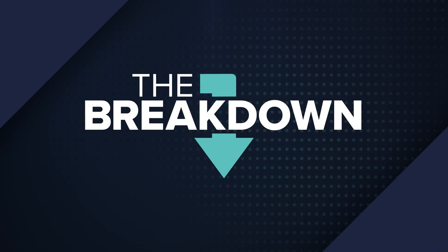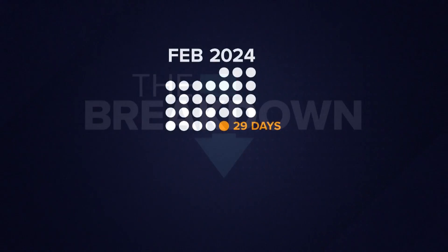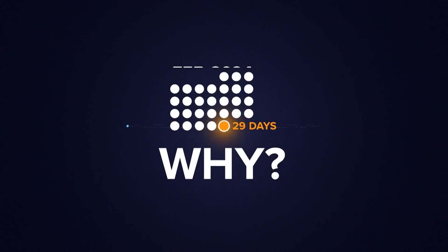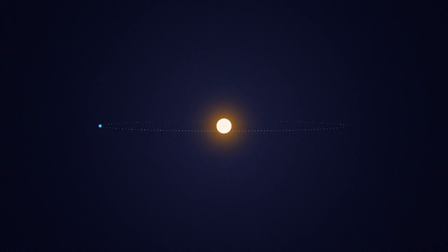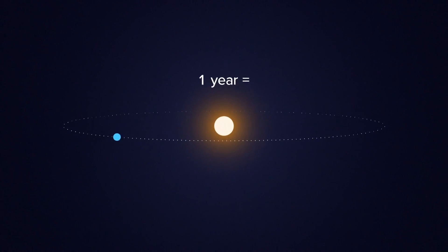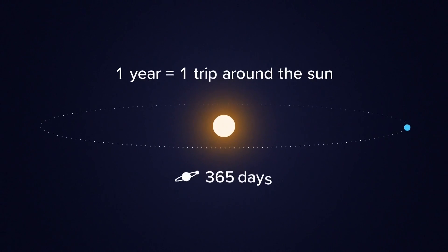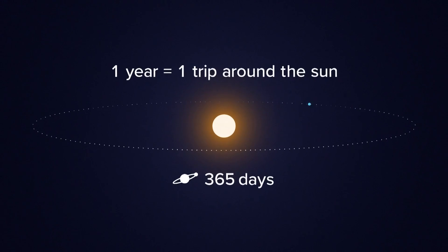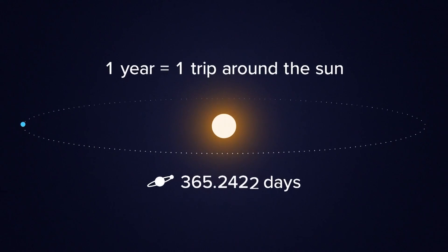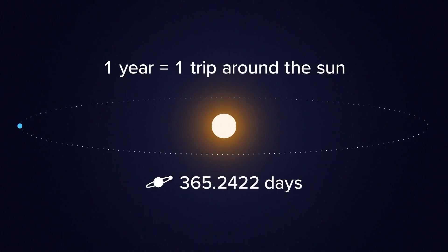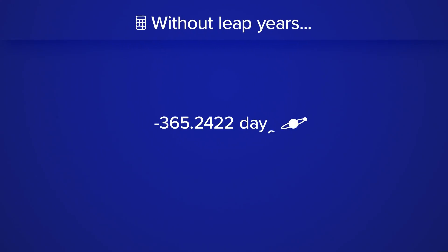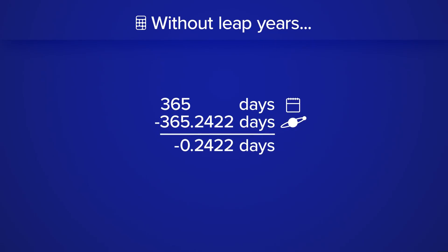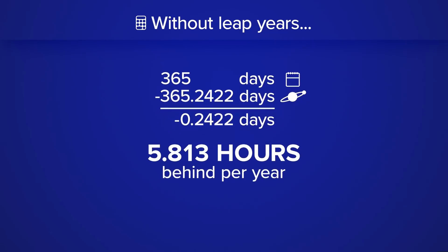In your breakdown, 2024 is a leap year, and the question arises: why do we have leap years? Well, the Earth takes one year to revolve around the sun, right? Not exactly. It actually takes 365.2422 days. So when you subtract and find the difference, it's not zero. We realized we're behind about 5.8 hours each year.